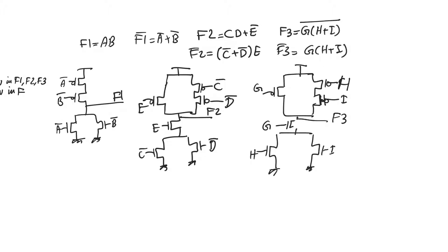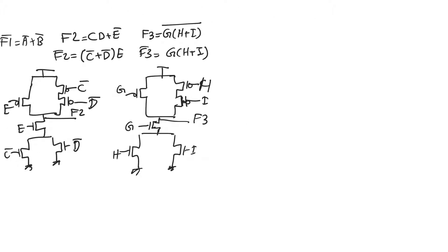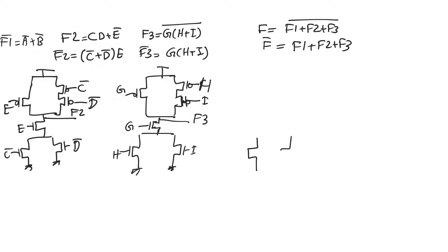Gate f, the big gate that combines f1, f2, and f3, is a three-input NOR. So f is (f1 plus f2 plus f3) bar, and f-bar equals f1 plus f2 plus f3 — a three-input NOR that we can implement fairly simply with f1, f2, and f3 as inputs.